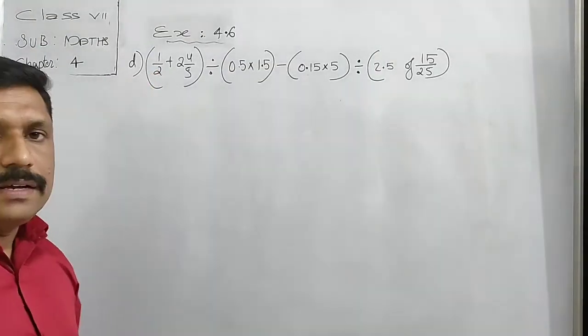Now listen carefully — the method is the same but with different numbers. The first question of the second set: 7 upon 9 minus, then curly bracket, square bracket, curly bracket, 7 upon 9 minus, round bracket, 7 upon 9 minus 4 upon 9, close bracket, then 'of' 1.8, minus 0.6 divided by 10.